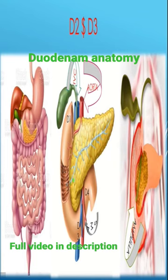The duodenal papilla — the Ampulla of Vater — is formed by the joining of the pancreatic duct and the common bile duct, which opens at this level. This is the duodenal papilla.